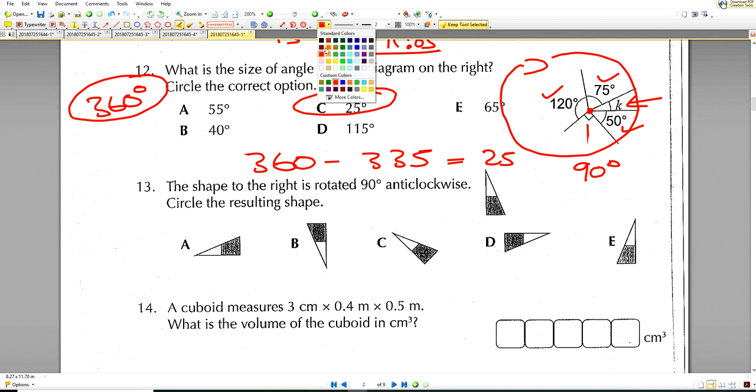Question number 13. The shape to the right is rotated 90 degrees anticlockwise. So we get this shape. It's facing like this way. We're going to turn 90 degrees anticlockwise, which means in the opposite direction of the clock, which means facing that way. So if we turn it around, the answer will be for 13. It will be nice and easy. A. Next question.